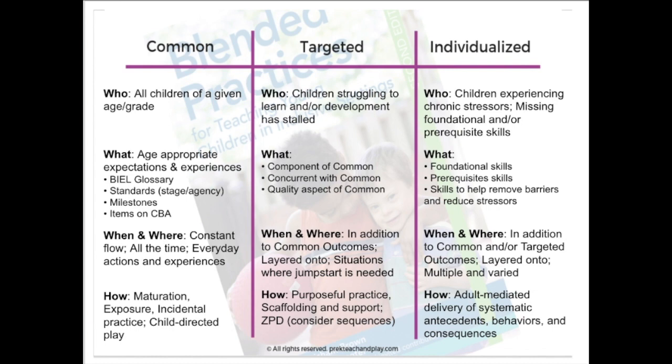My colleagues Jennifer Christian Brown, Mary Louise Hemeter, and I always talk about three types of outcomes: common, targeted, and individualized. When we think about common outcomes, we're going to walk through who, what, when, and how — and then we'll do that for targeted and then for individualized.